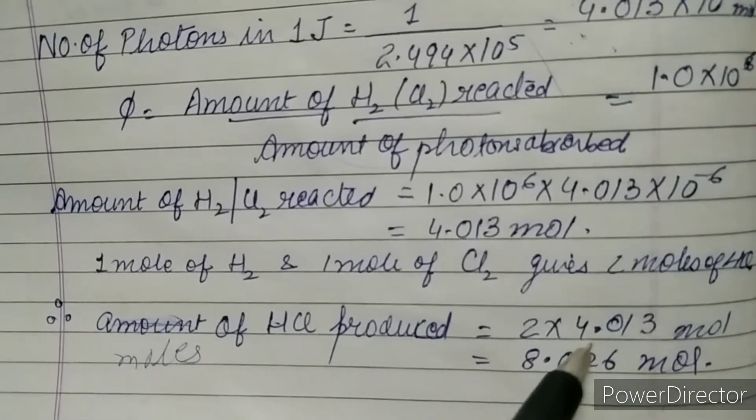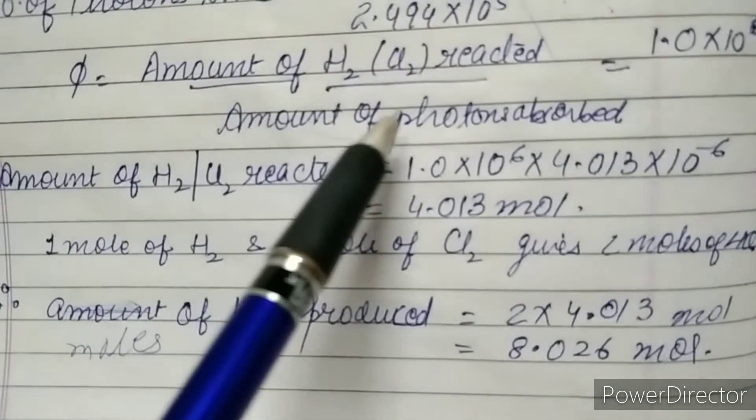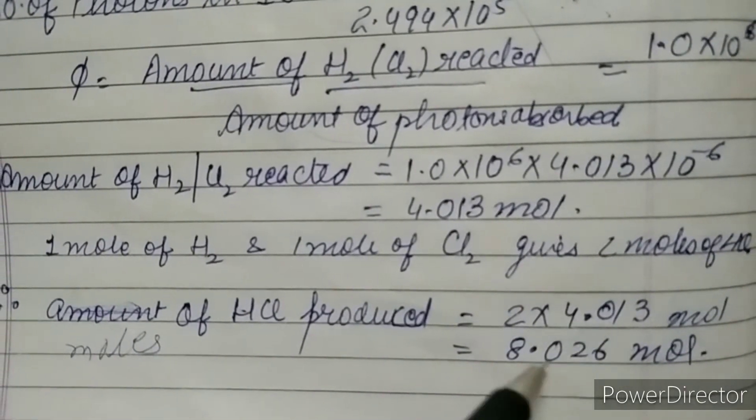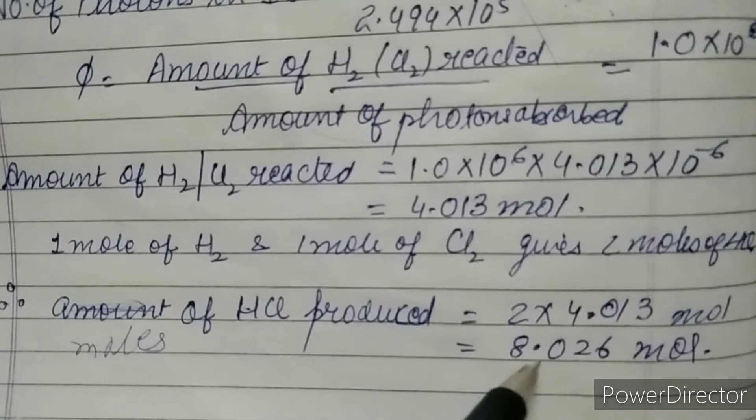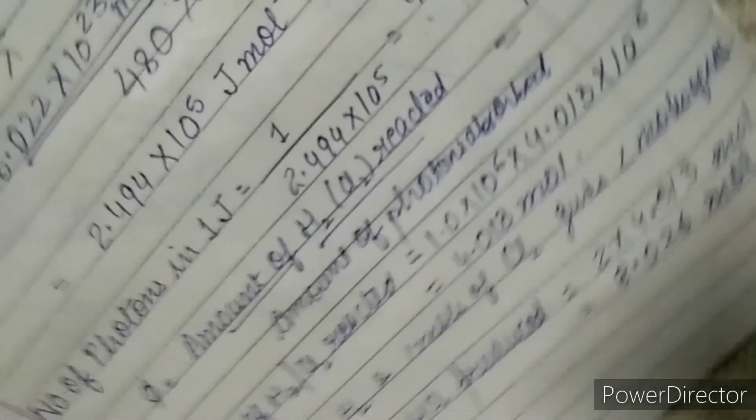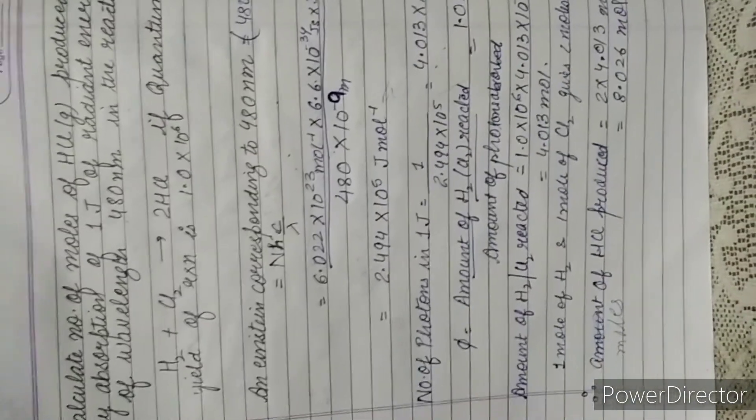So moles of HCl produced is 2 times amount of H₂ or Cl₂ reacted, that is 2 times 4.013 mole. So the answer comes out to be 8.026 moles. I hope the question is clear to you. If you are having any doubt you can comment in the comment box. Bye.